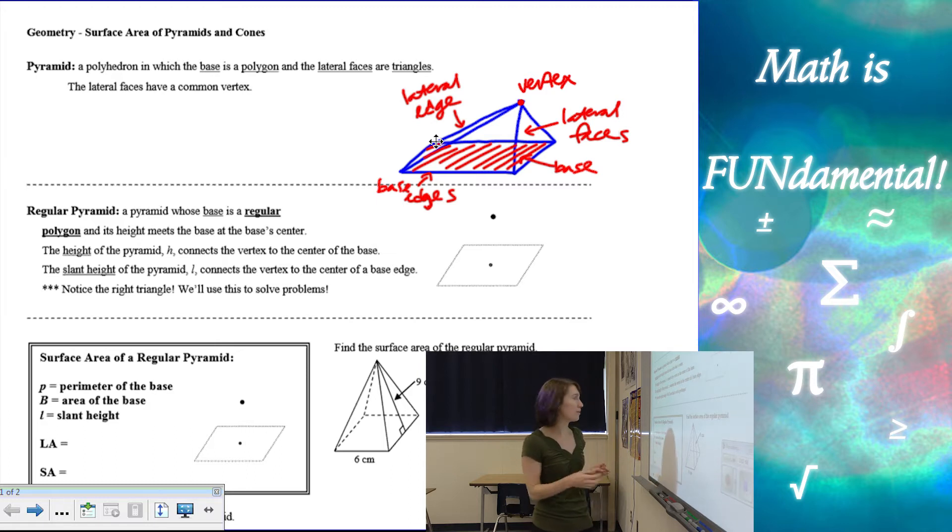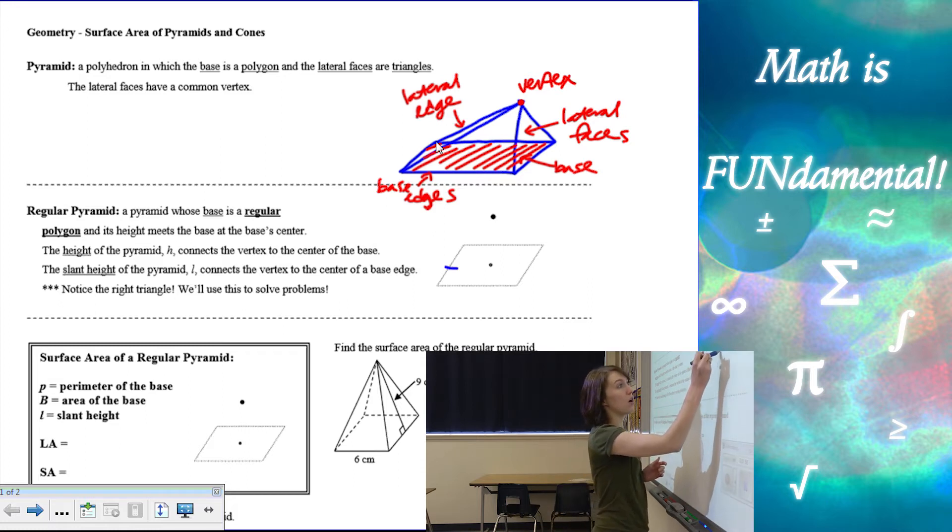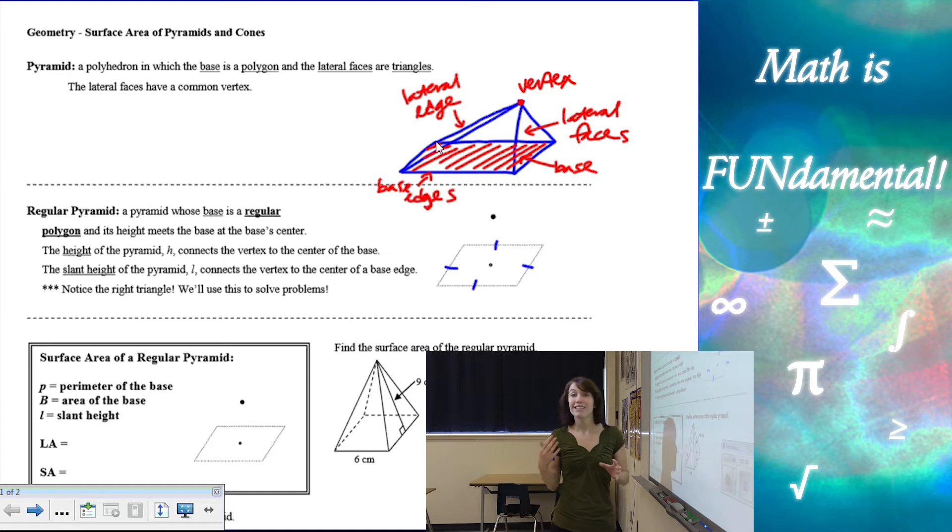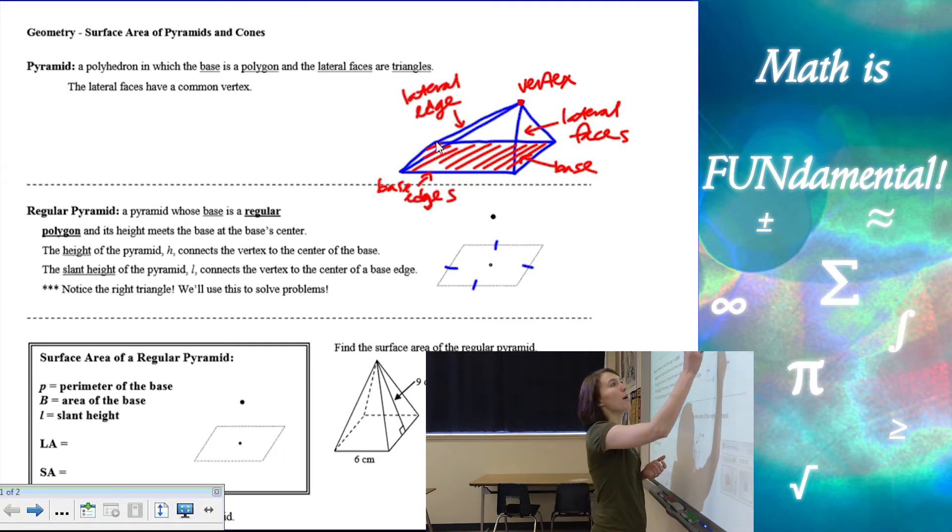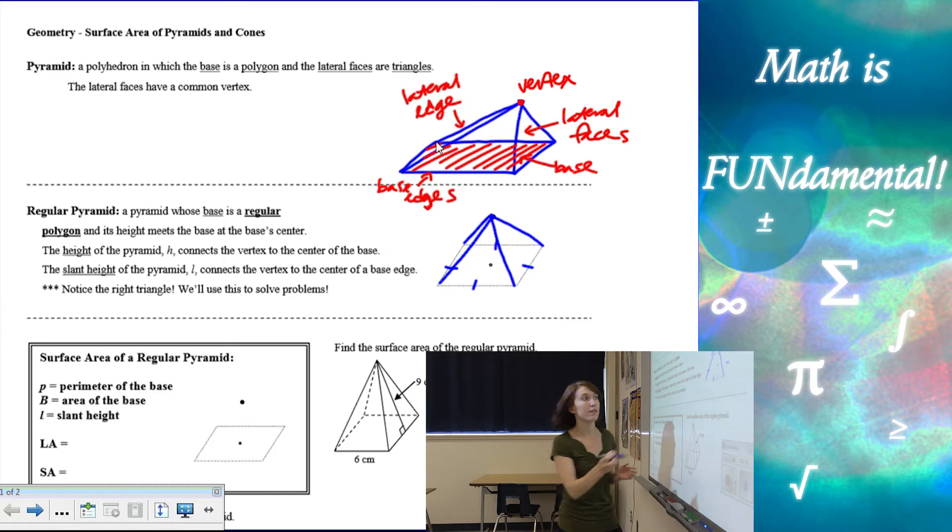Now a regular pyramid is a pyramid whose base is a regular polygon. So remember, that means that all of the sides are congruent. Technically all the angles would be congruent too. In this case, it doesn't look like they are. It looks more like a parallelogram than a square, or I guess a rhombus than a square. But it's only because we've kind of shifted this a little bit so that we can draw it. We're still going to assume that these are all 90 degree angles if it tells us it's a regular polygon, a regular pyramid.